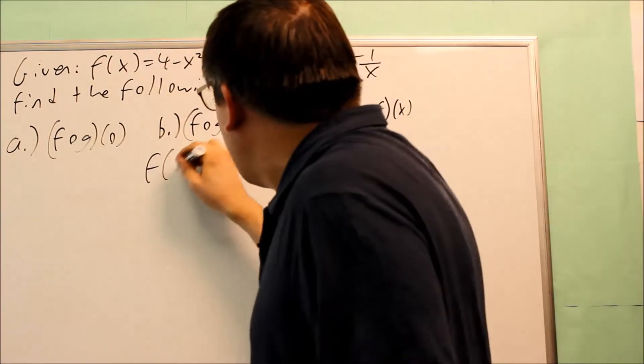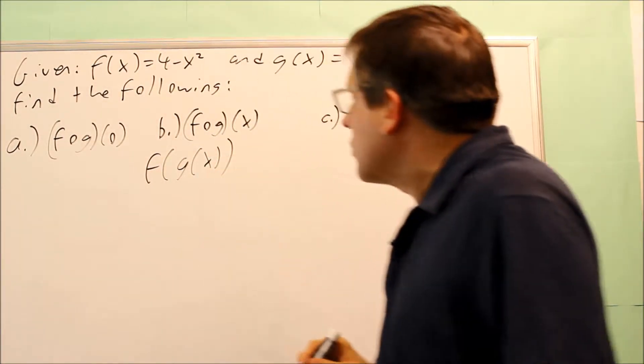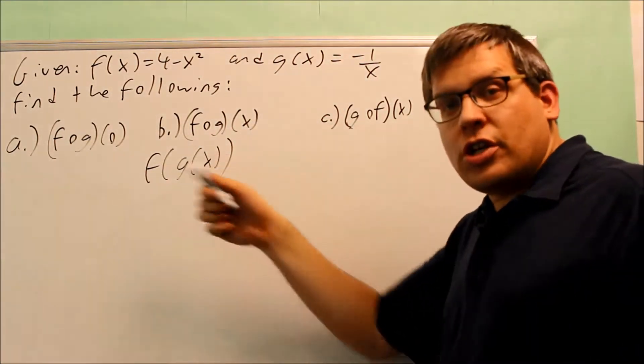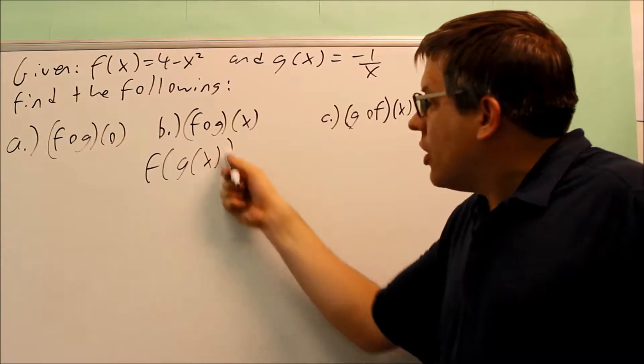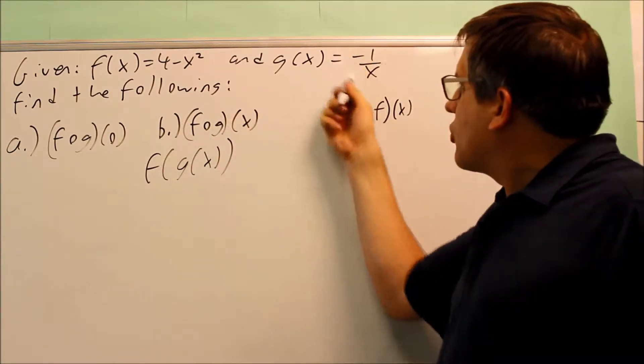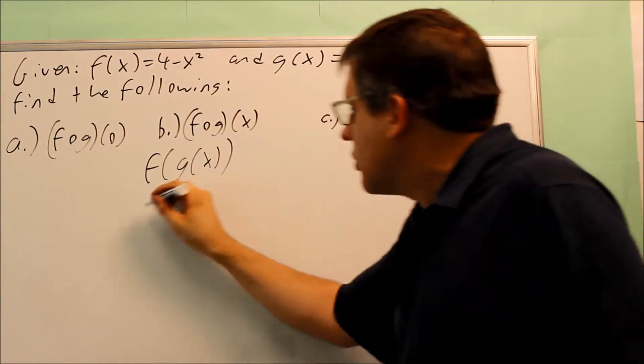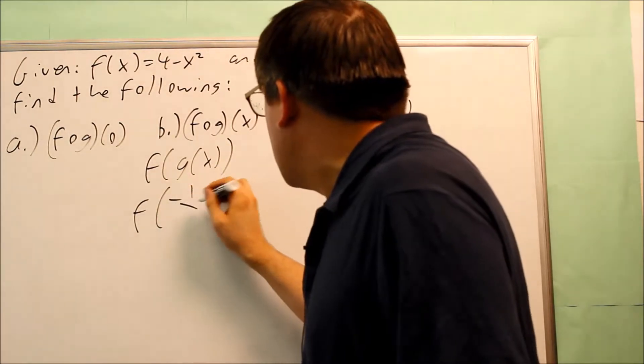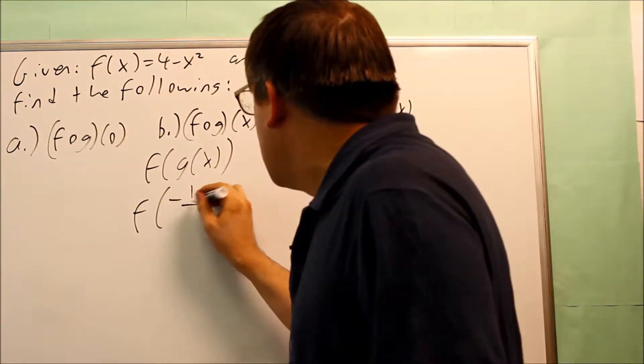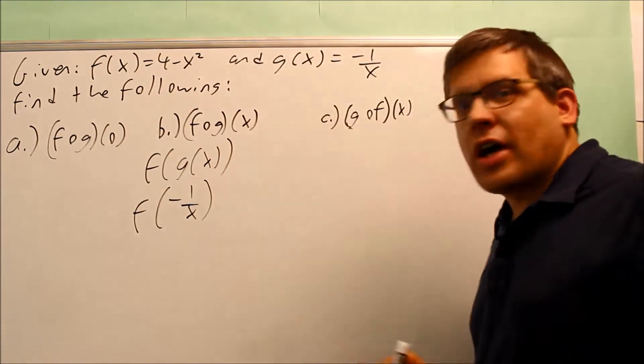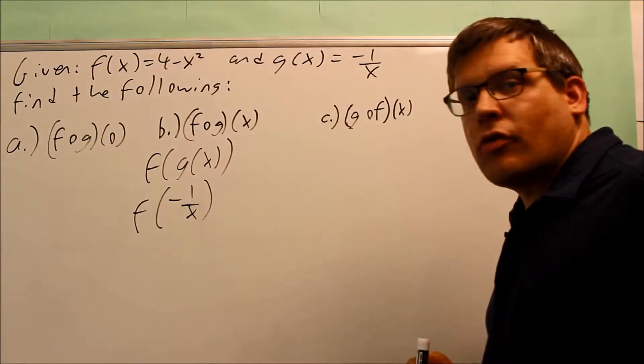With this, I'm going to do f of g of x. So I'm putting the g into the f. The g right here, that's this expression, negative 1 over x. So, I'm going to put the negative 1 over x inside there.